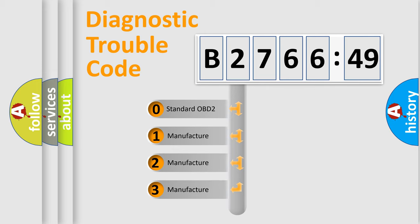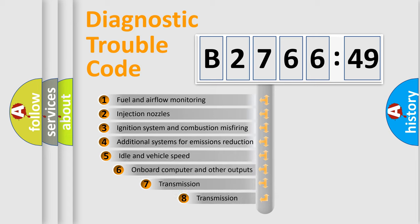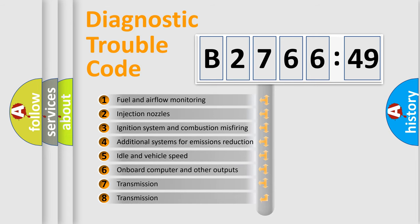This distribution is defined in the first character code. If the second character is expressed as zero, it is a standardized error. In the case of numbers 1, 2, or 3, it is a manufacturer-specific expression of the car-specific error.